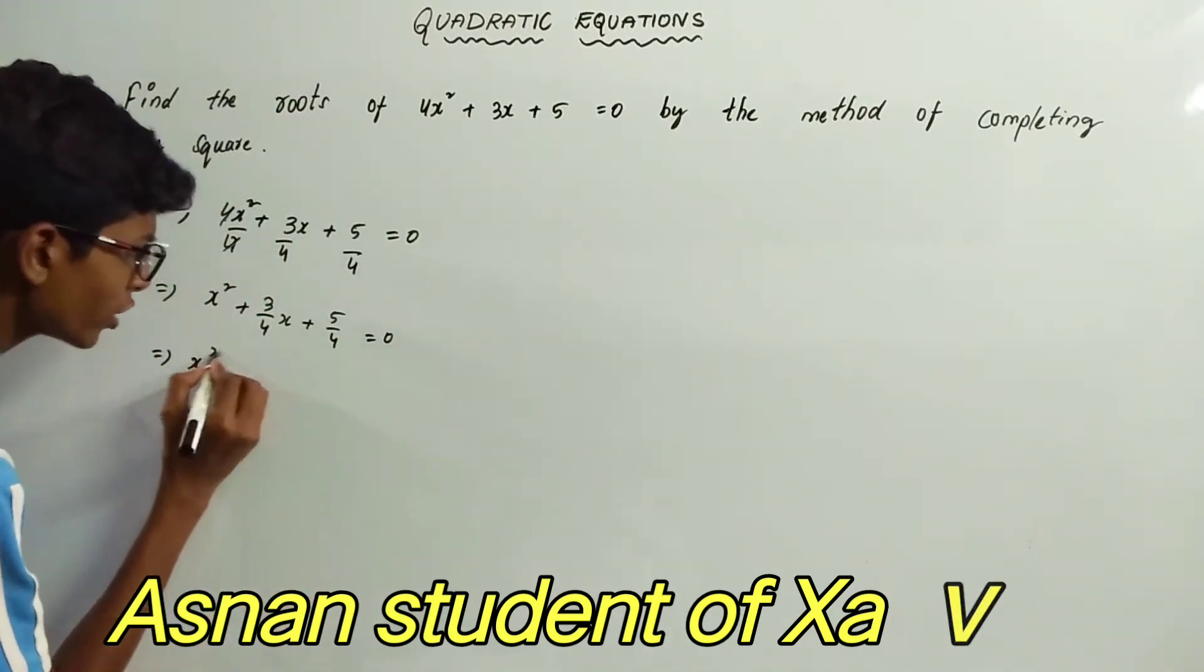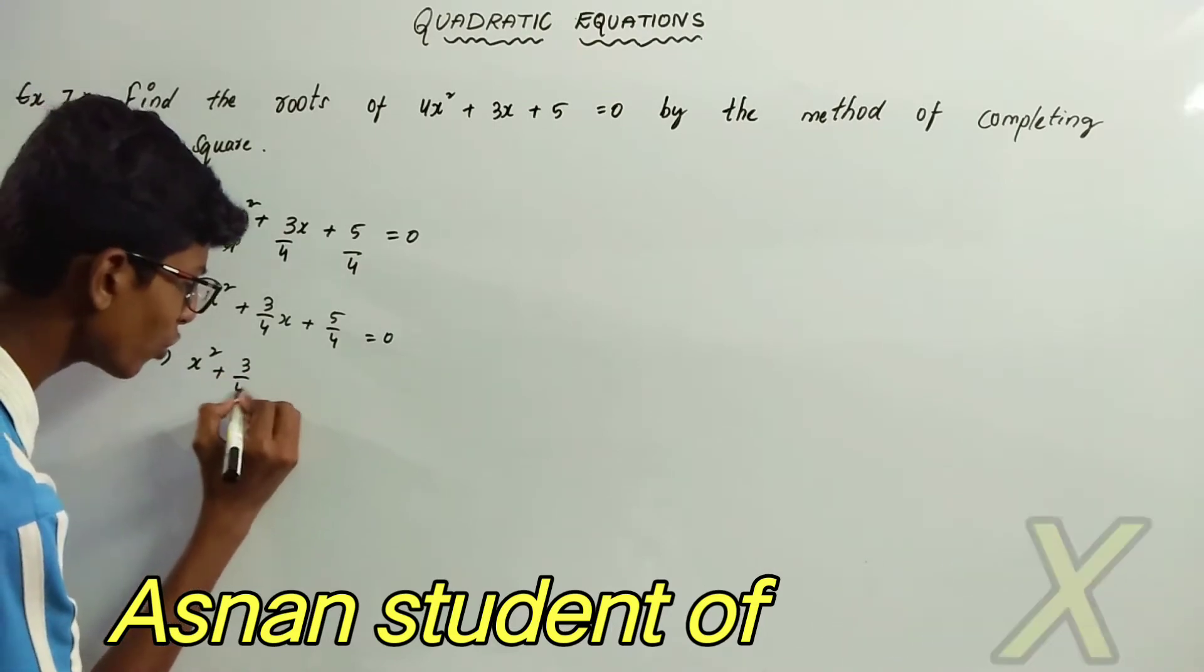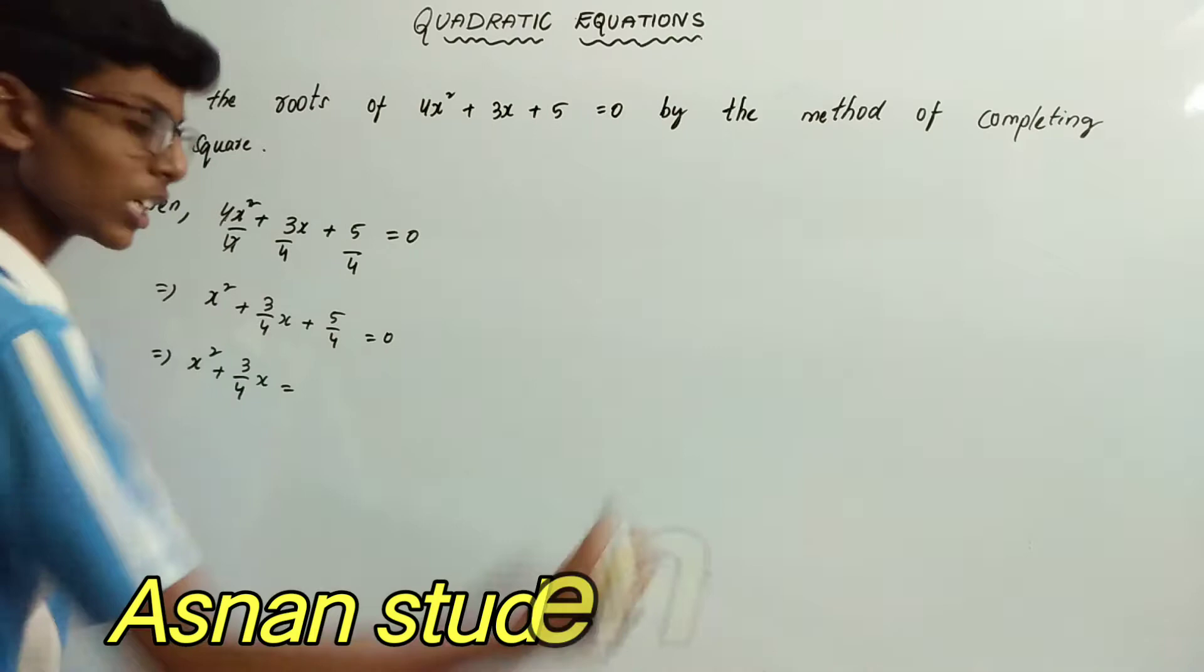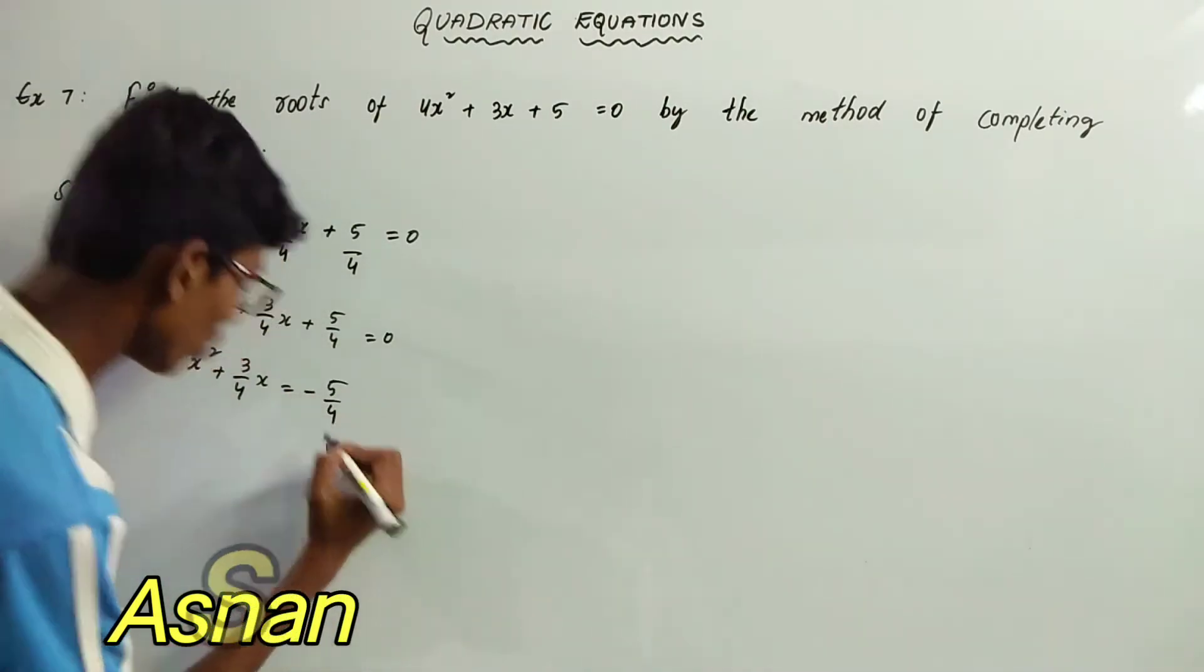That implies x² + (3/4)x equals... transposing +5/4 to the right-hand side, it will become -5/4.